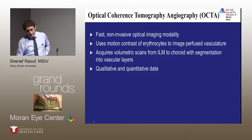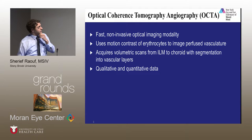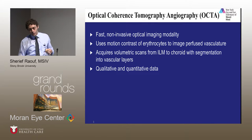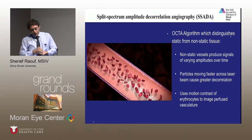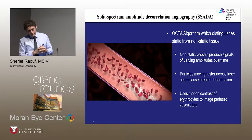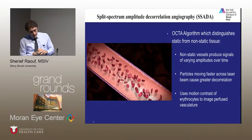Volumetric scans are acquired and segmented. One advantage is that you can acquire qualitative as well as quantitative data.